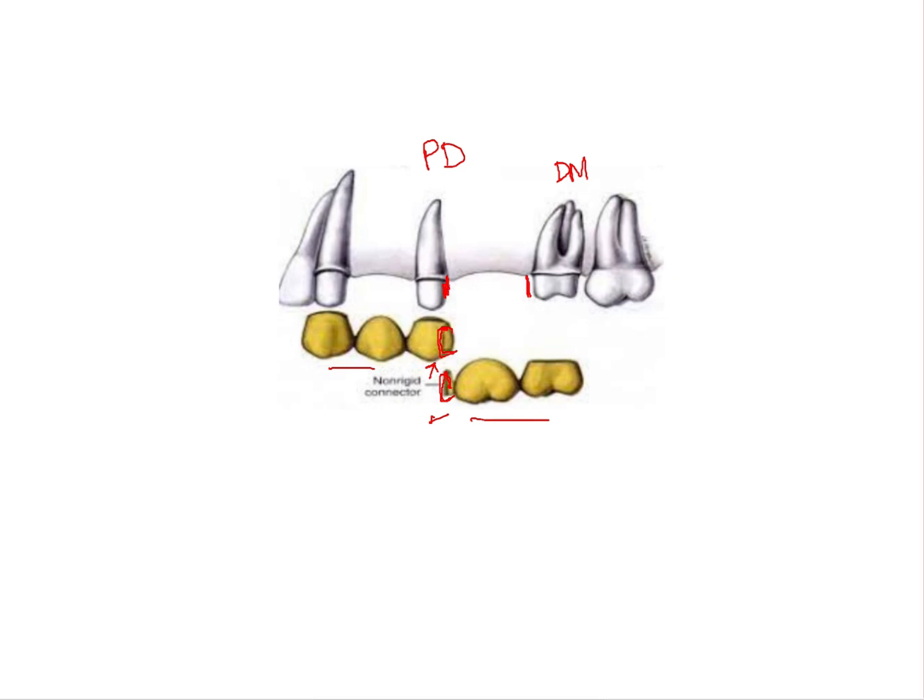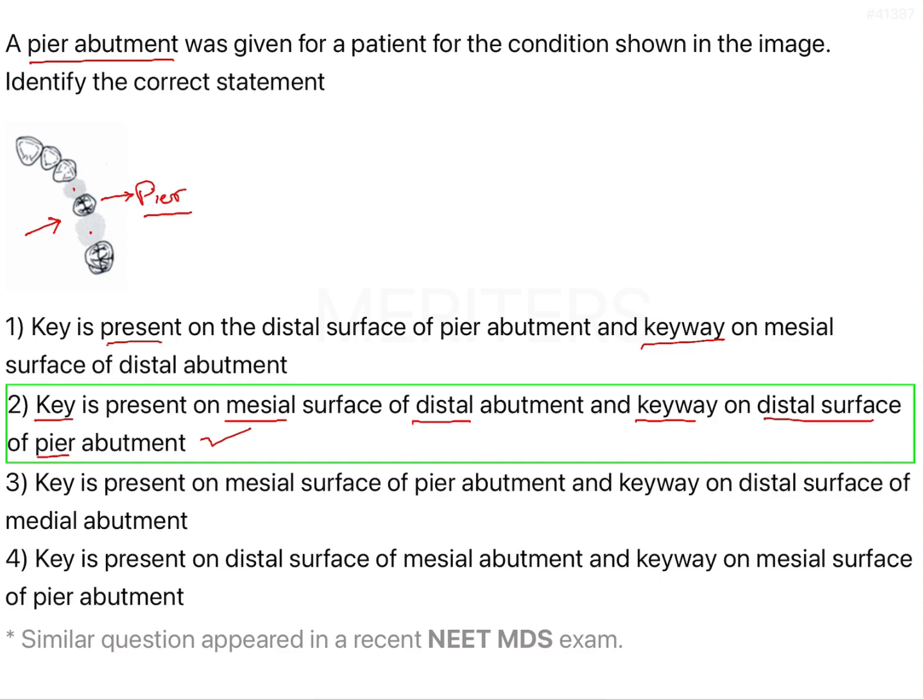And on the distal surface you have your keyway. Now other than this, about the pier abutment, you will also be asked about the other options of treatment that can be provided rather than the non-rigid connector.